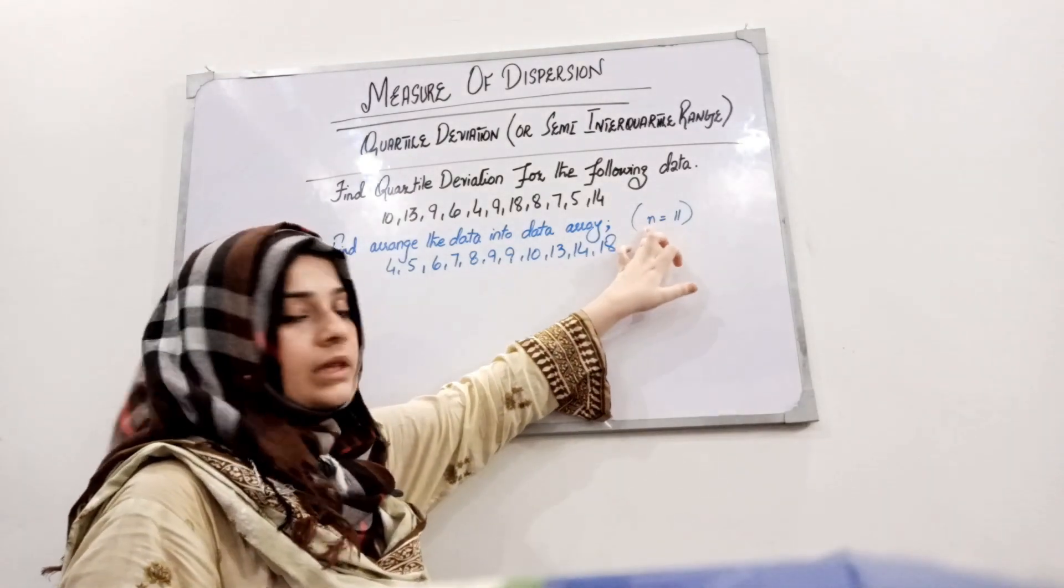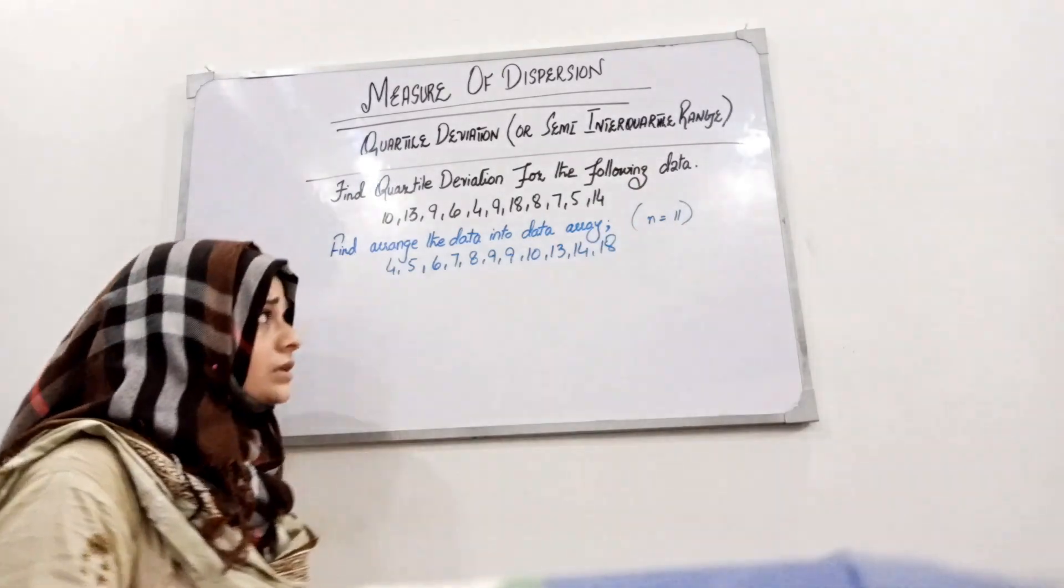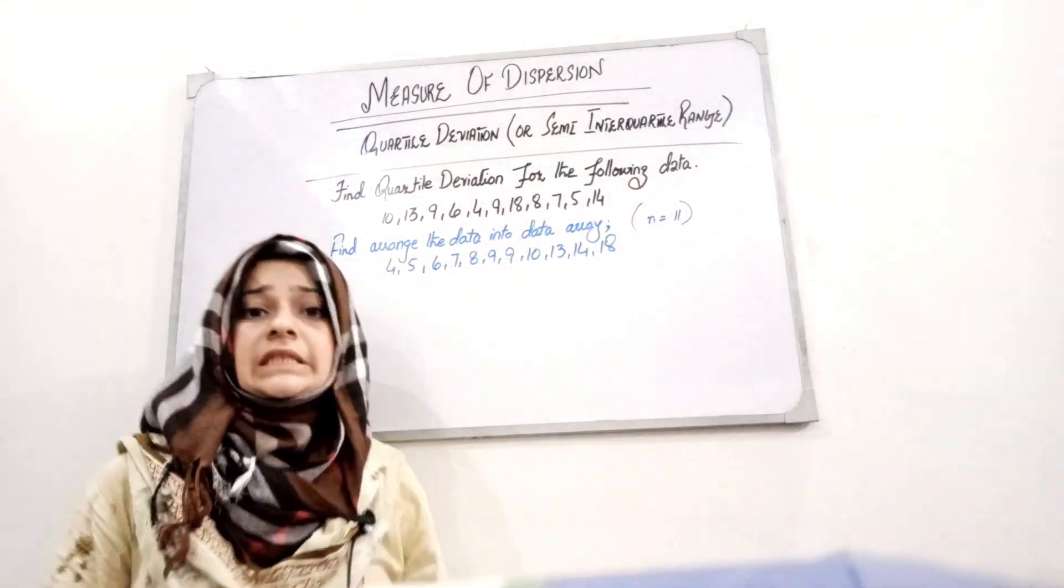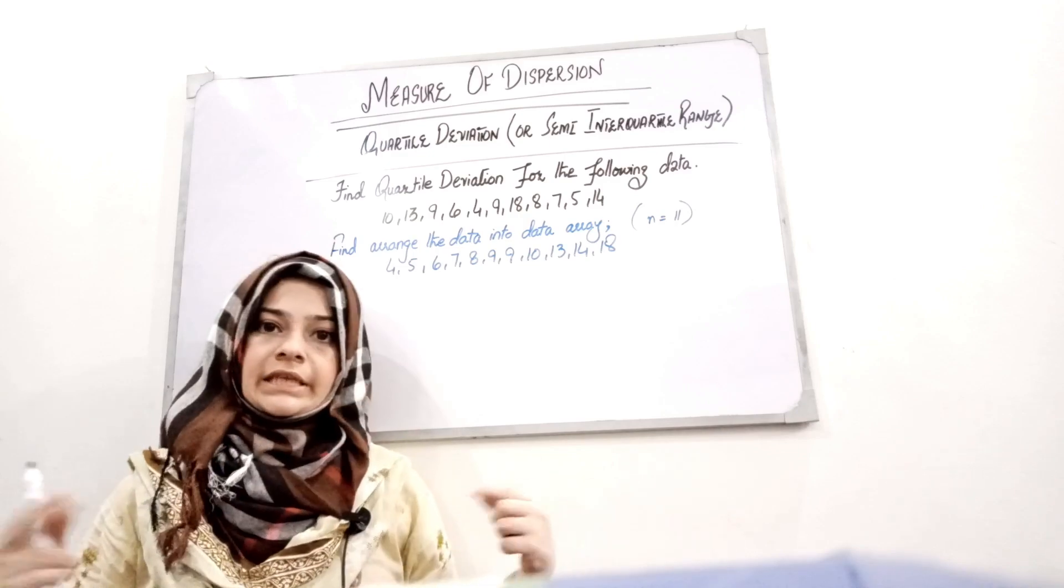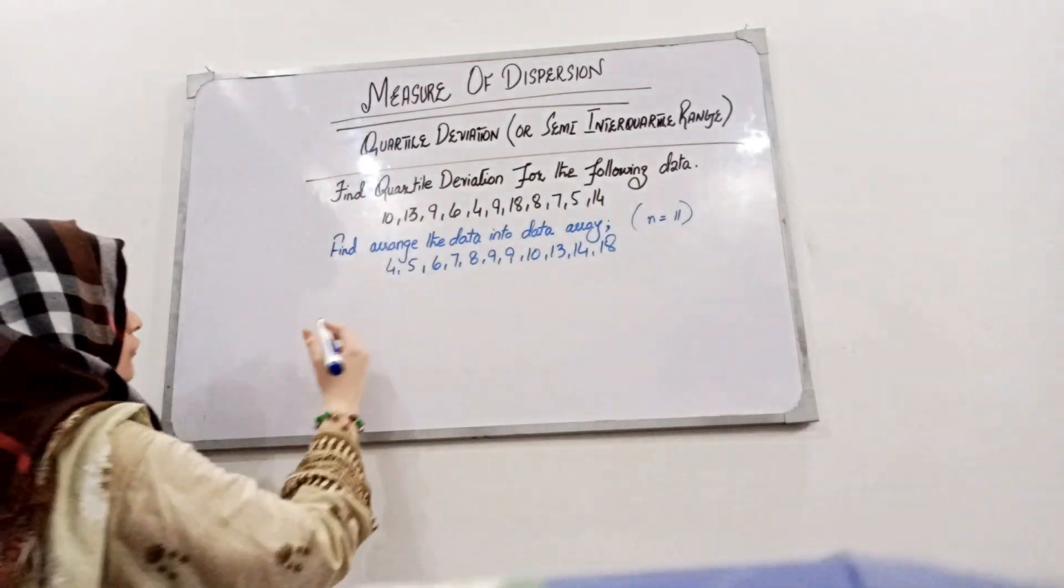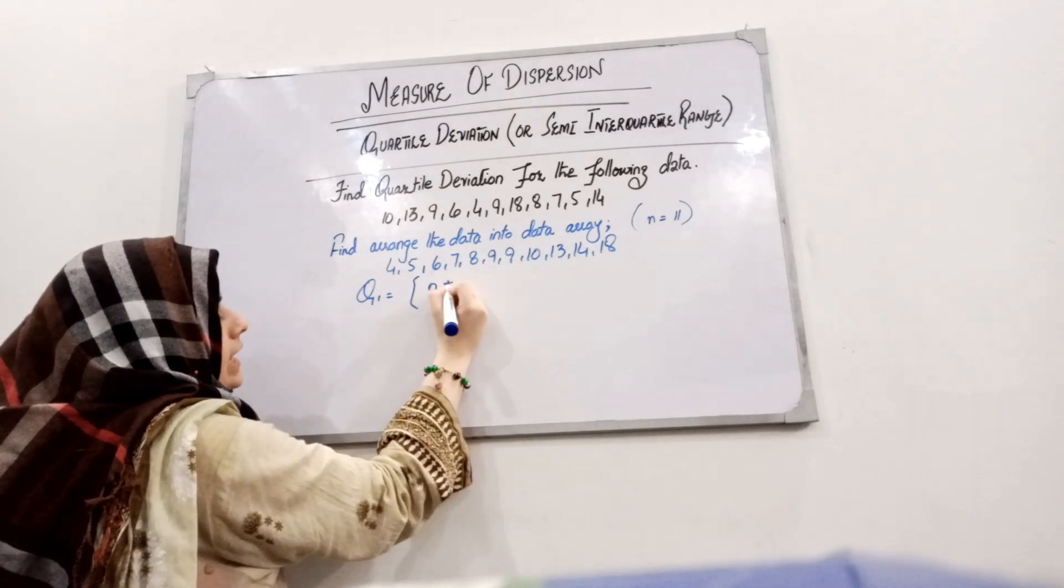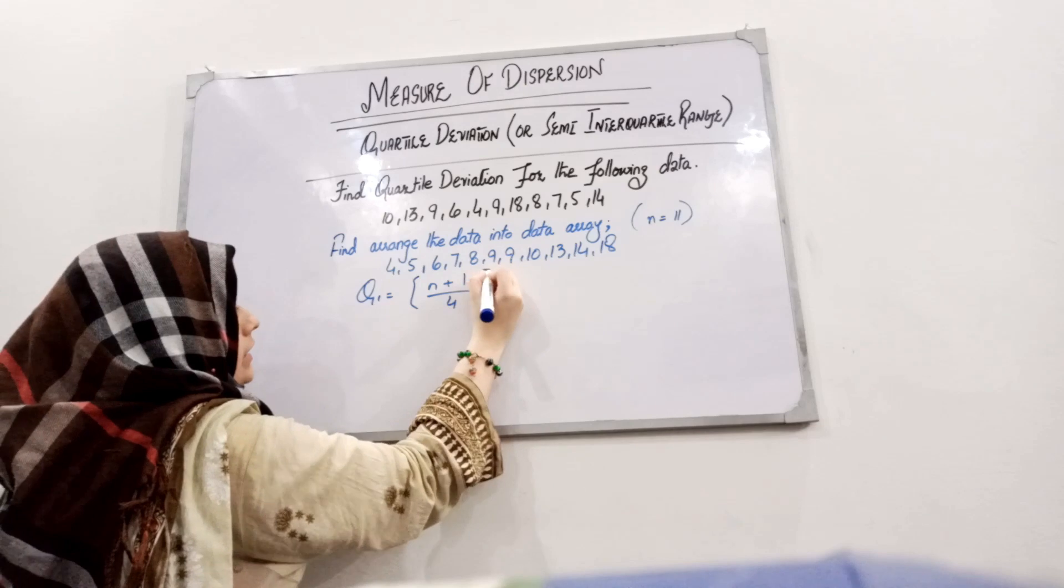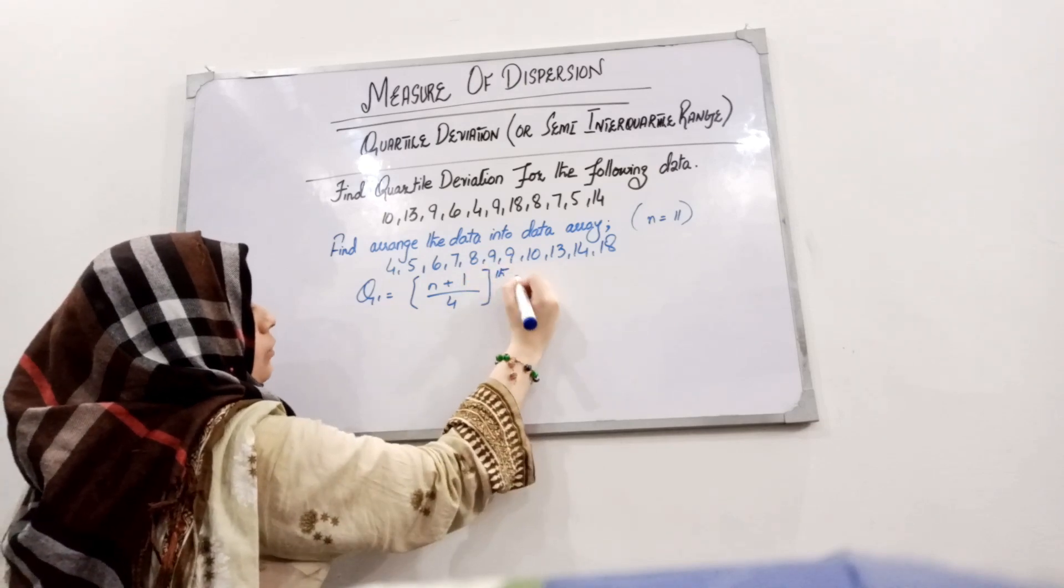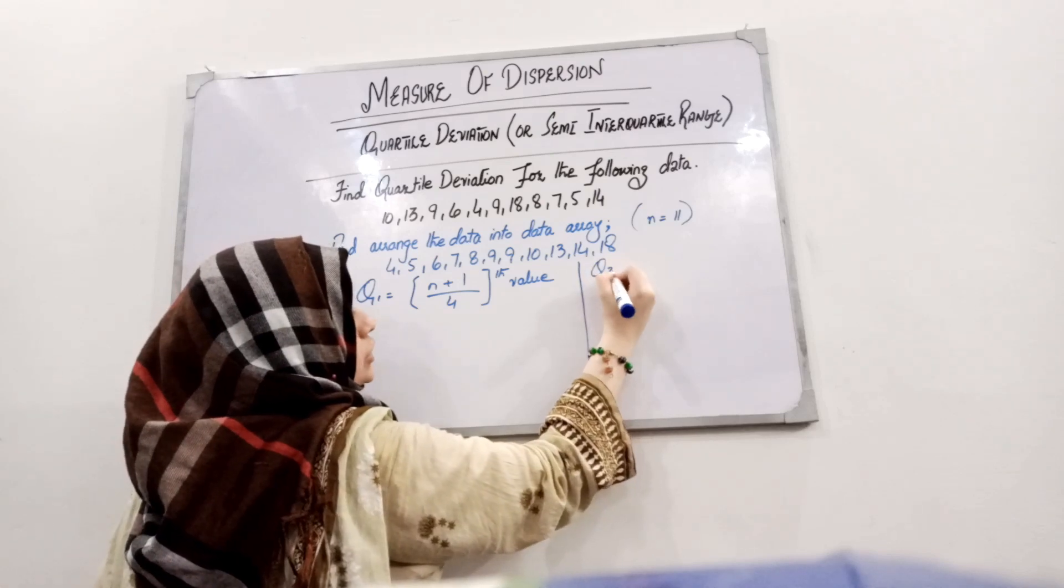we know that the total number of observations is 11. So for the quartile deviation, we need Q3 and Q1, then we will take the difference. For Q1, we know the formula is (n+1) divided by 4, which gives us the position. Here we will also calculate Q3...